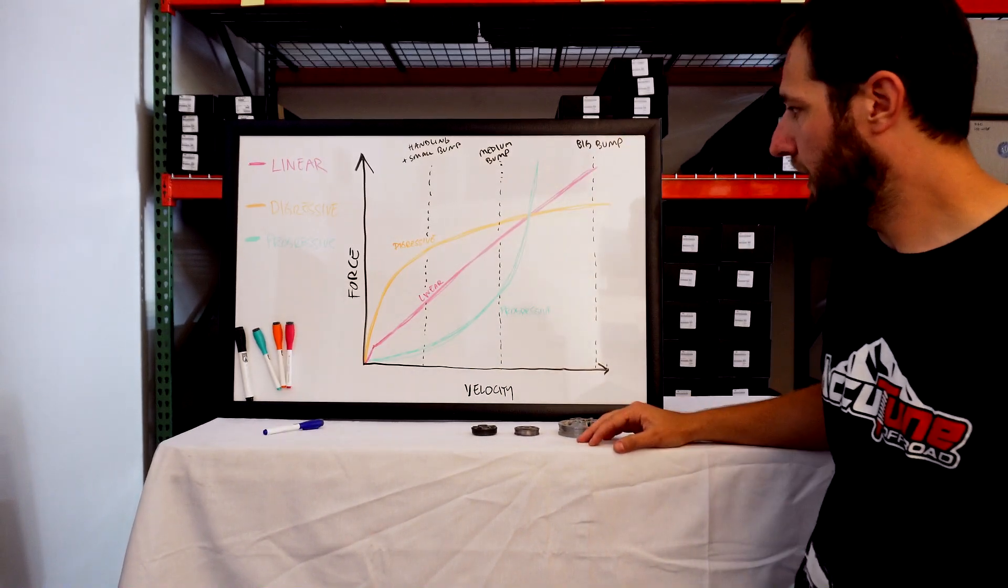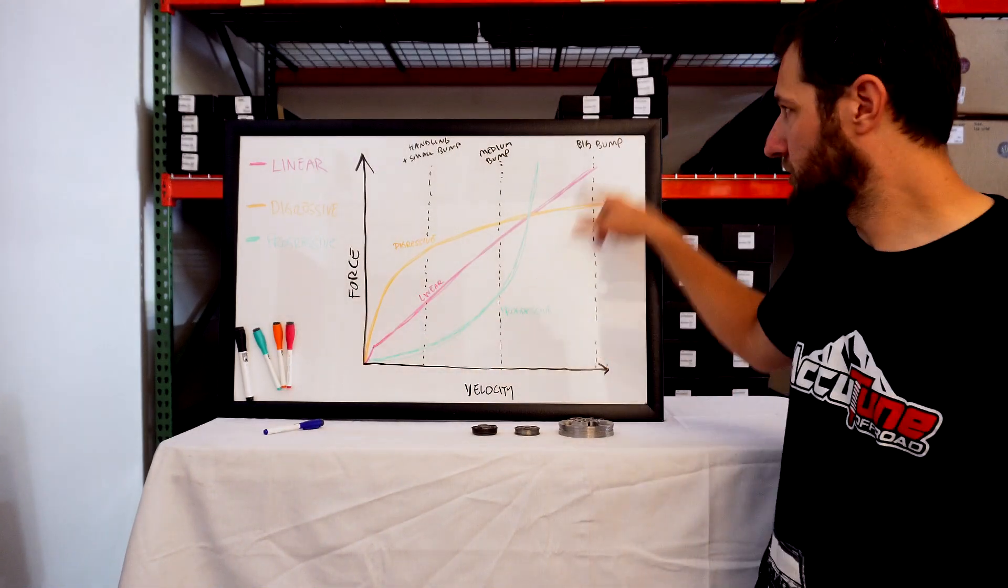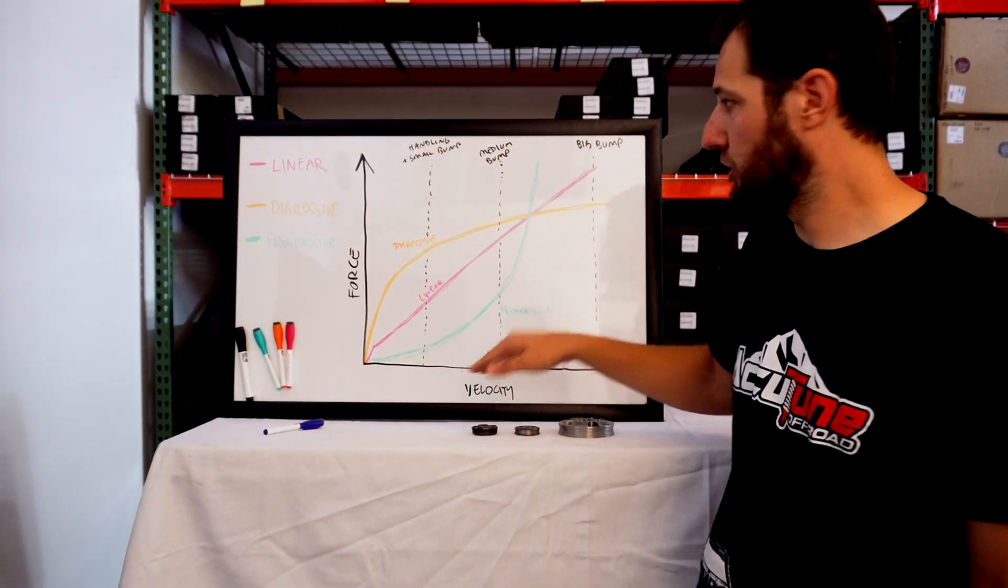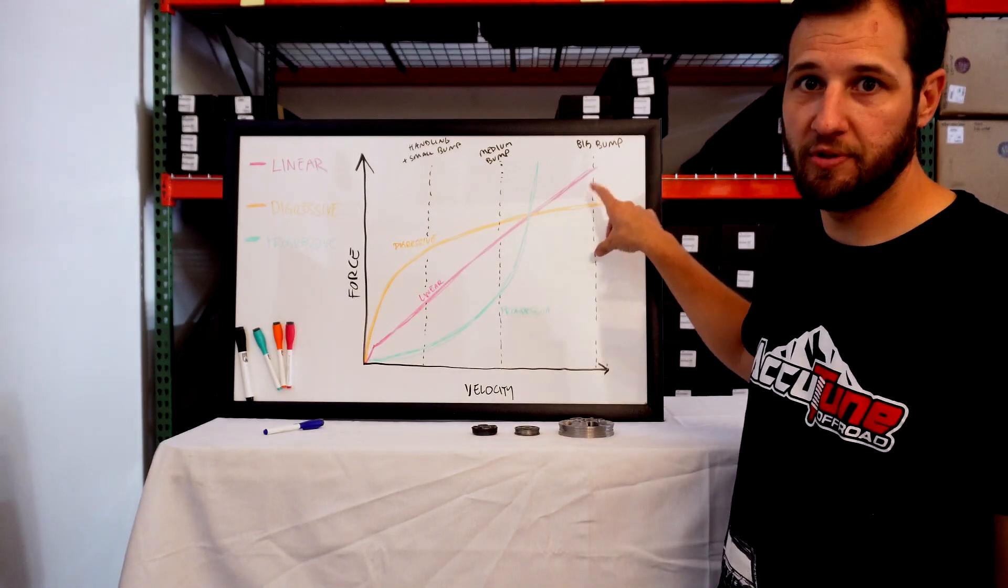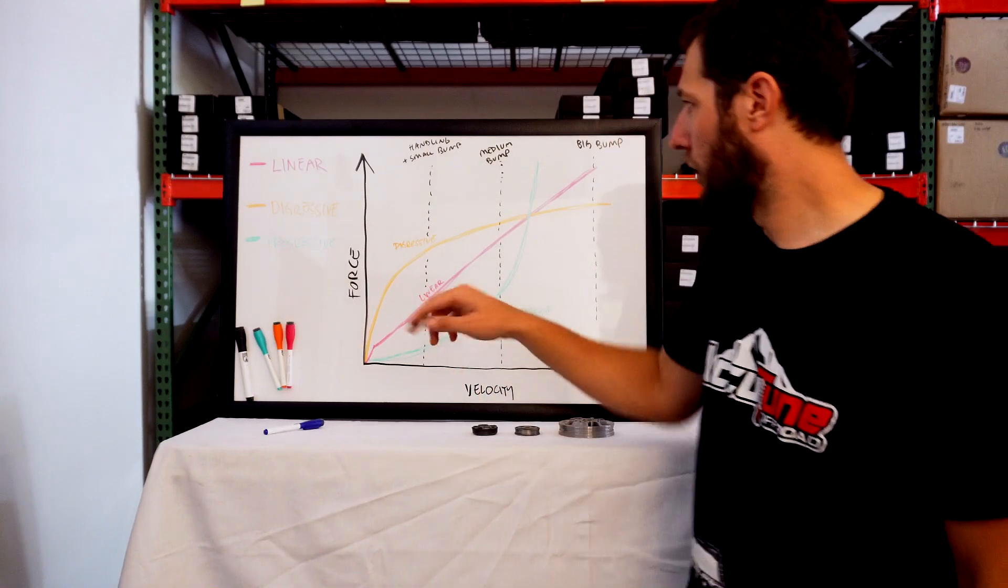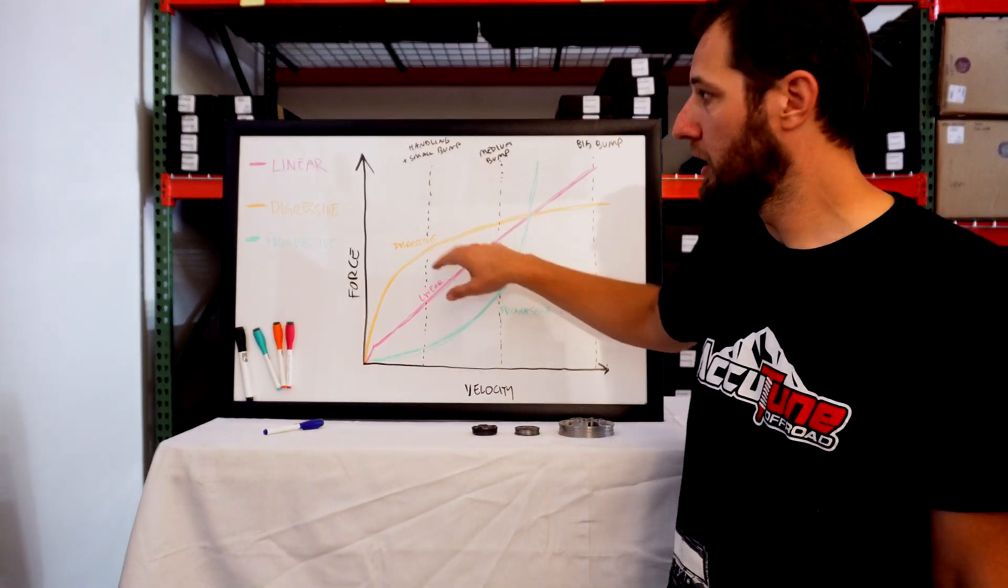Linear is sort of the gold standard that we shoot for, especially if you have just a straight single shock or just a coilover. We really like to see linear. If we've got an internal bypass or external bypass shock, then we start to bring in a progressive damping curve so you get that really nice ride quality down here and you can still hit the big bumps.